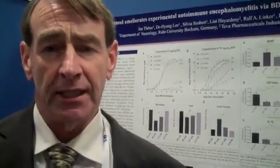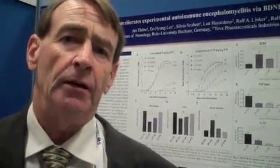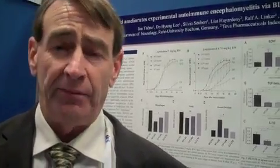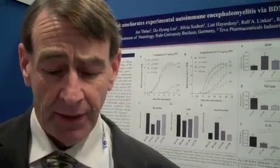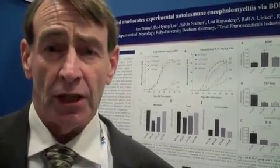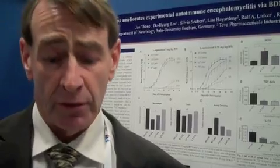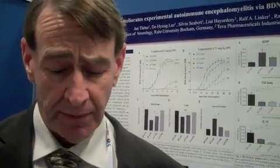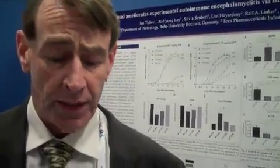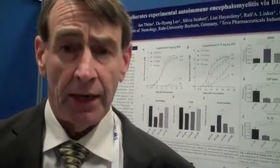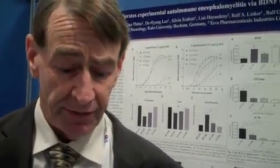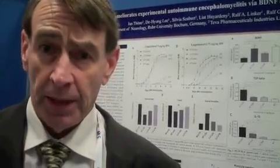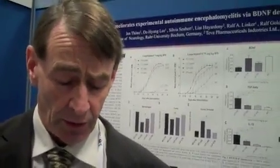One of the most interesting, and one that you'll hear the most about, is the Epstein-Barr virus. It turns out that basically 100% of adult patients who have MS have been infected with the Epstein-Barr virus. An infection late in childhood is associated with a greater risk of developing MS, and in fact, children with MS also have a much higher rate of Epstein-Barr virus infection compared to those children who don't have MS.